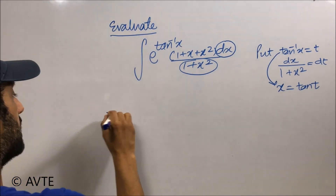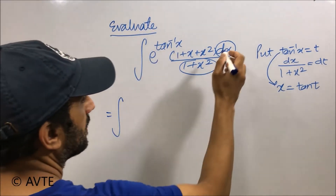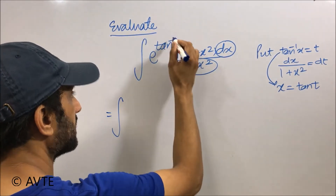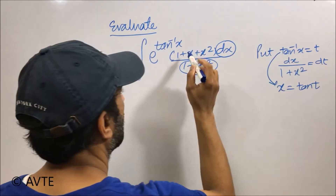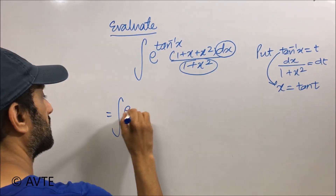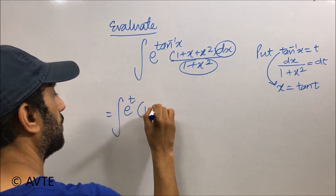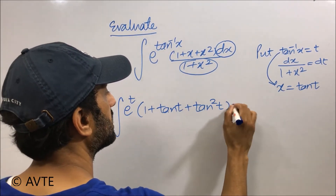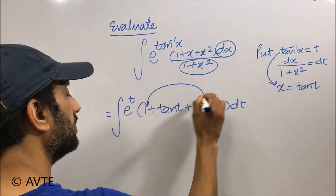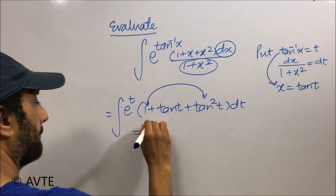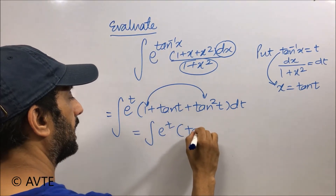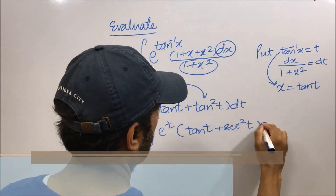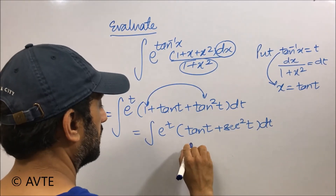Now it's time to substitute. dx over 1 plus x squared is replaced with dt, tan inverse x becomes t, and every x becomes tan t. So the integral becomes e to the power t times (1 plus tan t plus tan squared t) dt. We can combine 1 plus tan squared t to get e to the power t times (tan t plus secant squared t) dt.